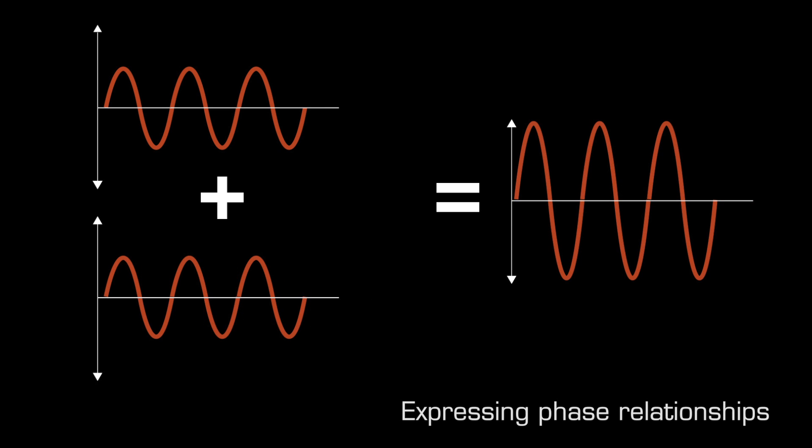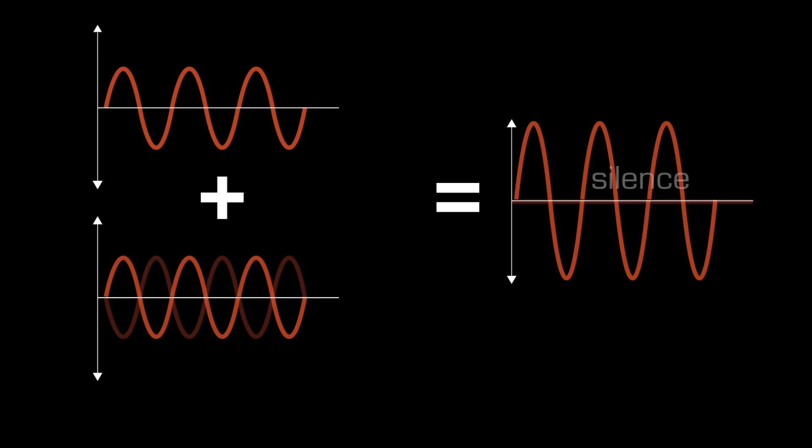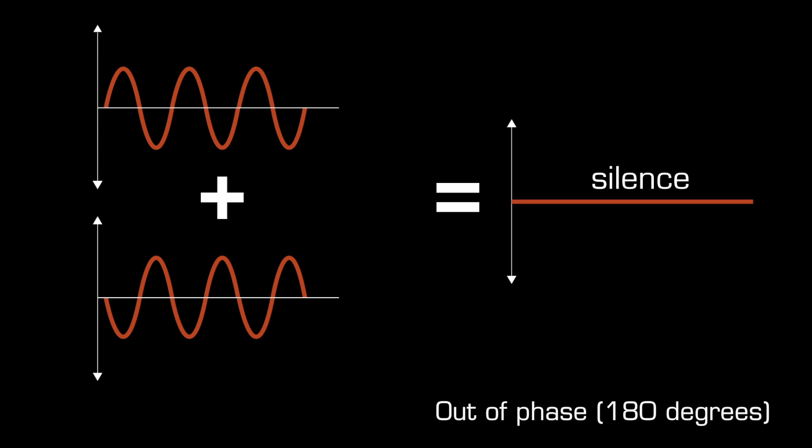These phase relationships can be expressed more precisely in degrees. Two in-phase signals are said to have a phase relationship of zero degrees, whilst two completely out of phase signals have a phase relationship of 180 degrees.